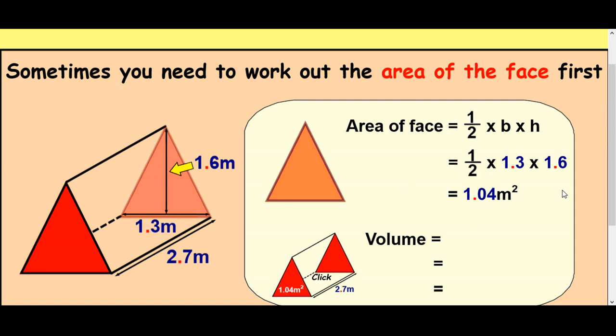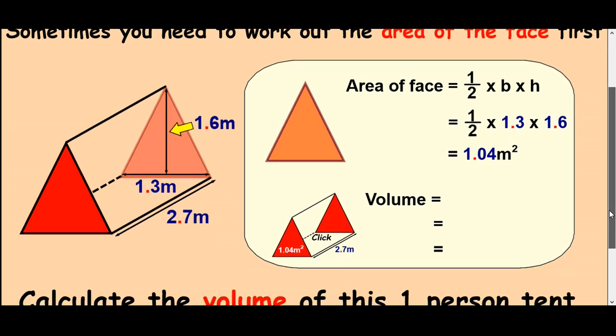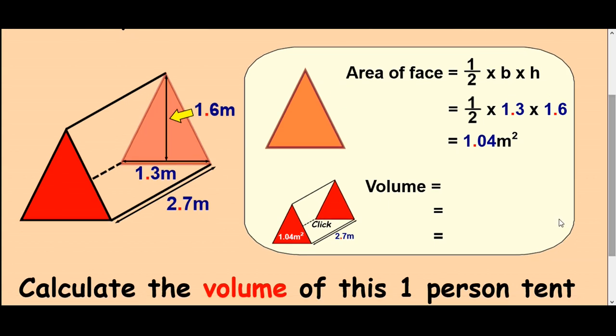So down here now we know that the area of the face part is 1.04. And we have to work out the volume of the prism. So basically just use the formula we had before. Area of the face part times the length. So it's 1.04 times 2.7. Use your calculator here to get your answer. So the final answer is 2.81 meters cubed.